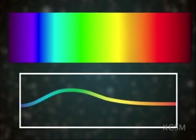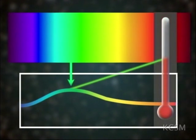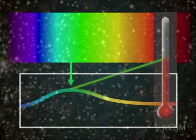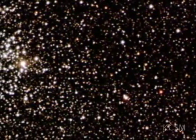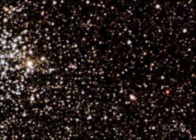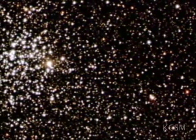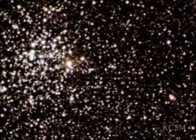The peak or brightest color of the spectrum indicates the temperature of the object. The value of the continuous spectrum to astronomers is that it easily reveals an approximate temperature of a dense gas. However, unlike the emission line spectrum, it does not reveal the composition of that gas.